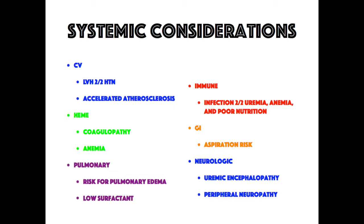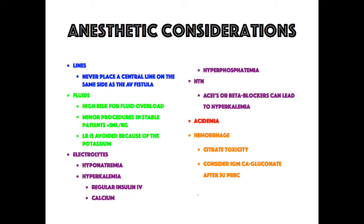Neurologically, renal failure patients are at risk for uremic encephalopathy as well as peripheral neuropathy. If you're considering doing a nerve block, you want to know if the patient has any numbness and tingling already in that area.